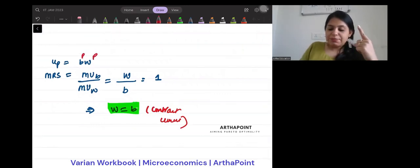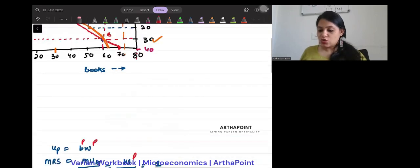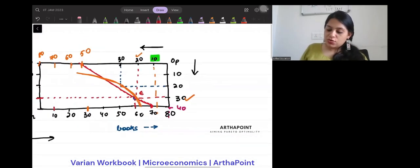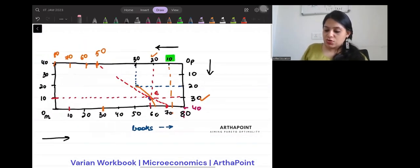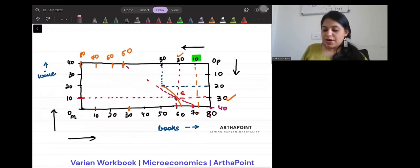And now I have to show all Pareto-optimal allocation, and what are those Pareto-optimal allocations where W is equal to B? Now if you notice, this is from the side of Philip, right? PP. So this is P, this is PP. So I want to draw that line such that WP is equal to BP.